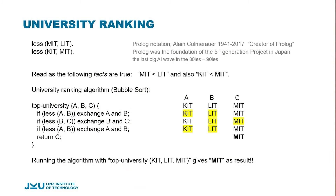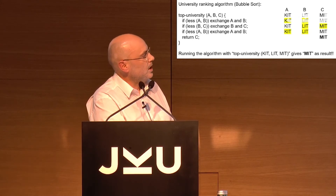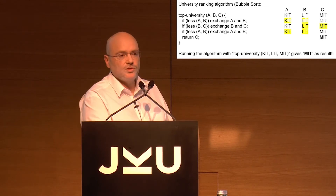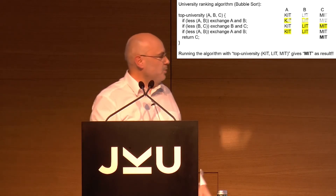Running bubble sort on our data: it checks whether KIT is less than LIT, but there's no such fact in our database, so no swap happens. It then checks whether LIT is less than MIT — again no fact, so no exchange. The algorithm keeps the lexicographic order and returns the last element, which gives us MIT as the top university. That's not what we expect given these facts, so what's the problem?